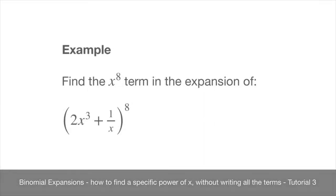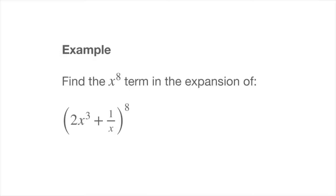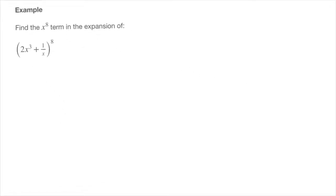In this tutorial, we work through another example in which we find a specific power of x inside a binomial expansion without writing all of its terms. The example we see here: we need to find the x to the power of 8 term in the expansion of 2x cubed plus 1 over x, all raised to the power of 8. I'll start by moving this question to the side, and we can get started.